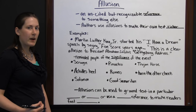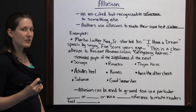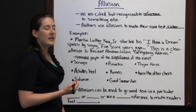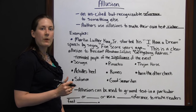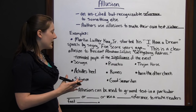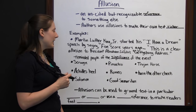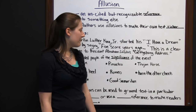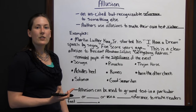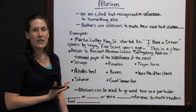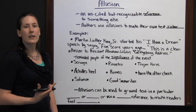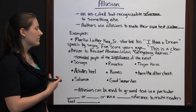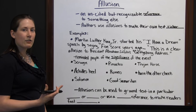Your Achilles heel would be your weak spot where someone could really get to you. 'Romeo,' from Romeo and Juliet, would be someone who was really good with women — someone who was great at getting dates. 'Turn the other cheek' is a biblical reference when Jesus told people they shouldn't seek revenge but should turn the other cheek — it's a metaphor for saying don't seek revenge; that's not the Christian way.